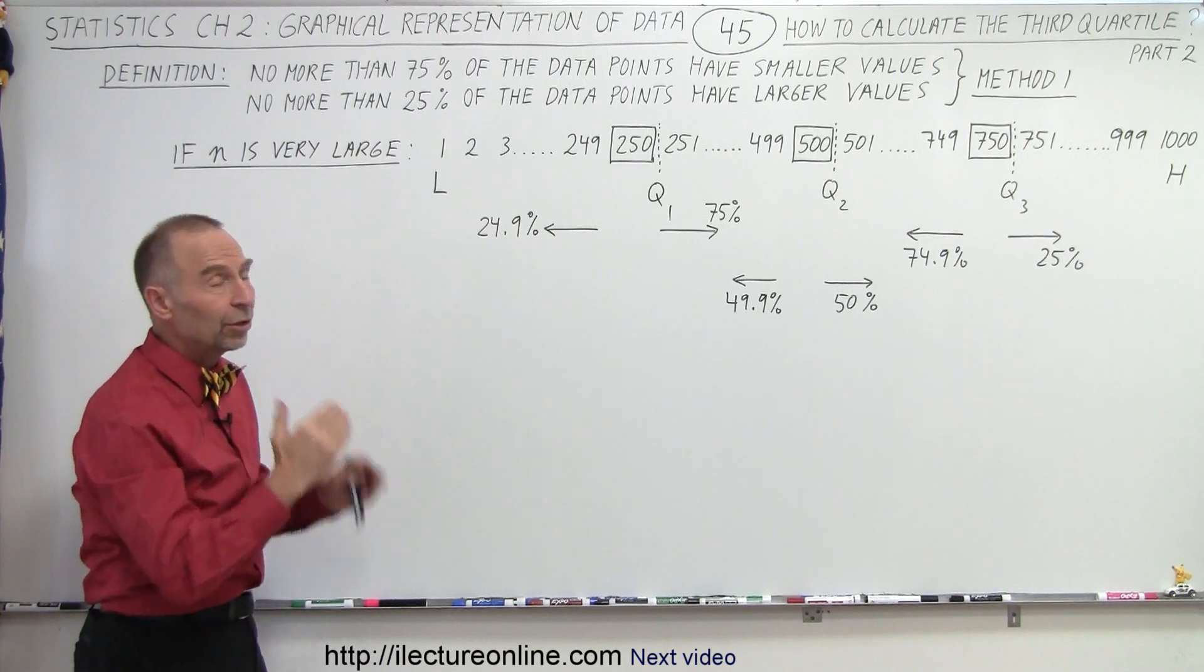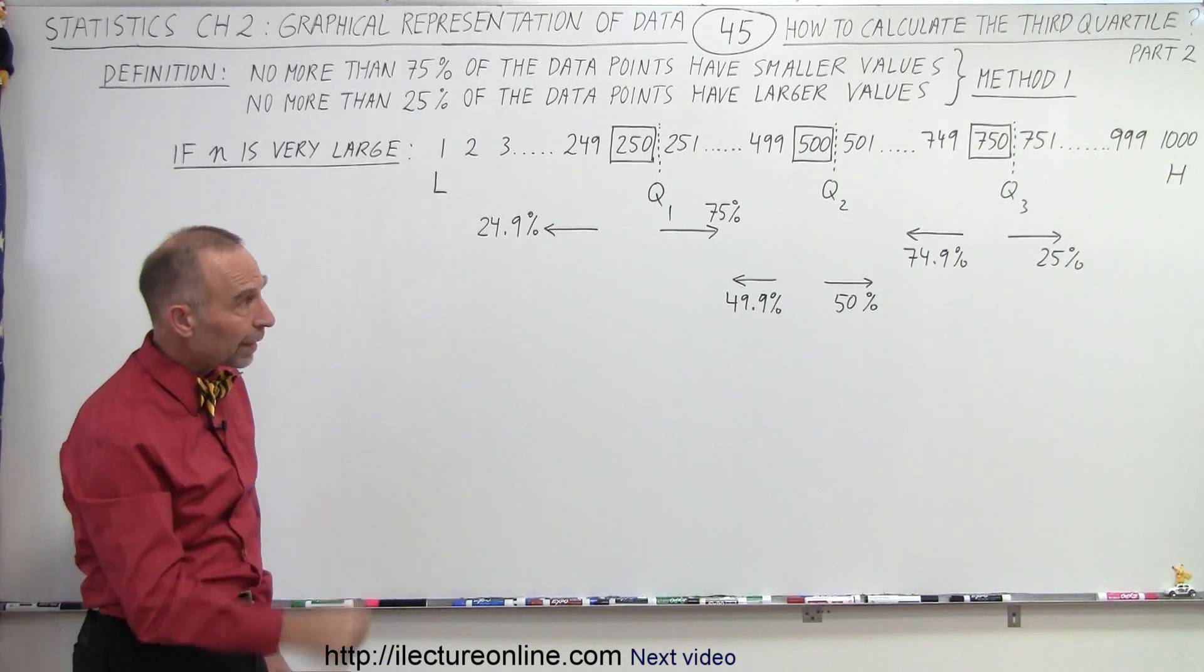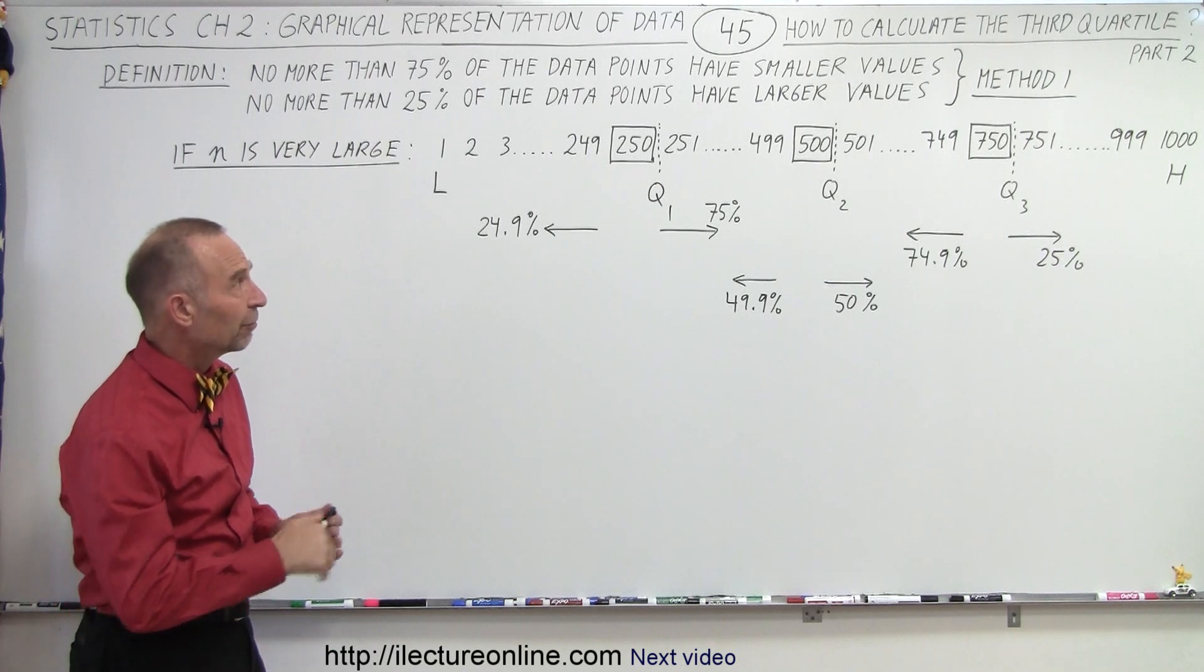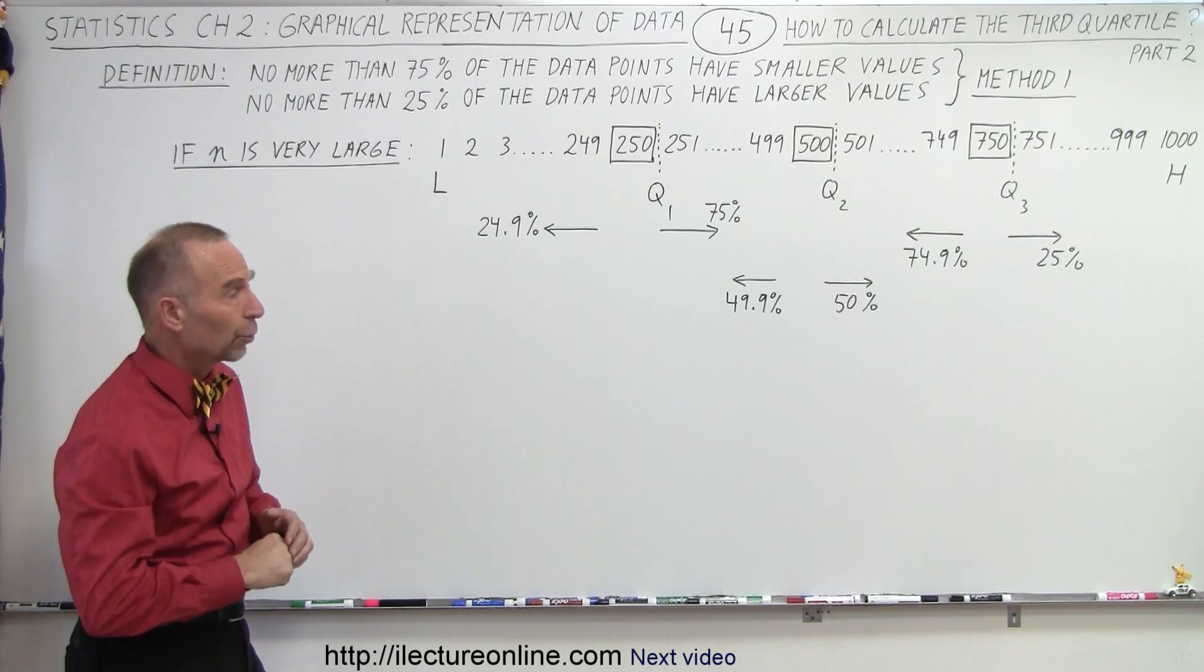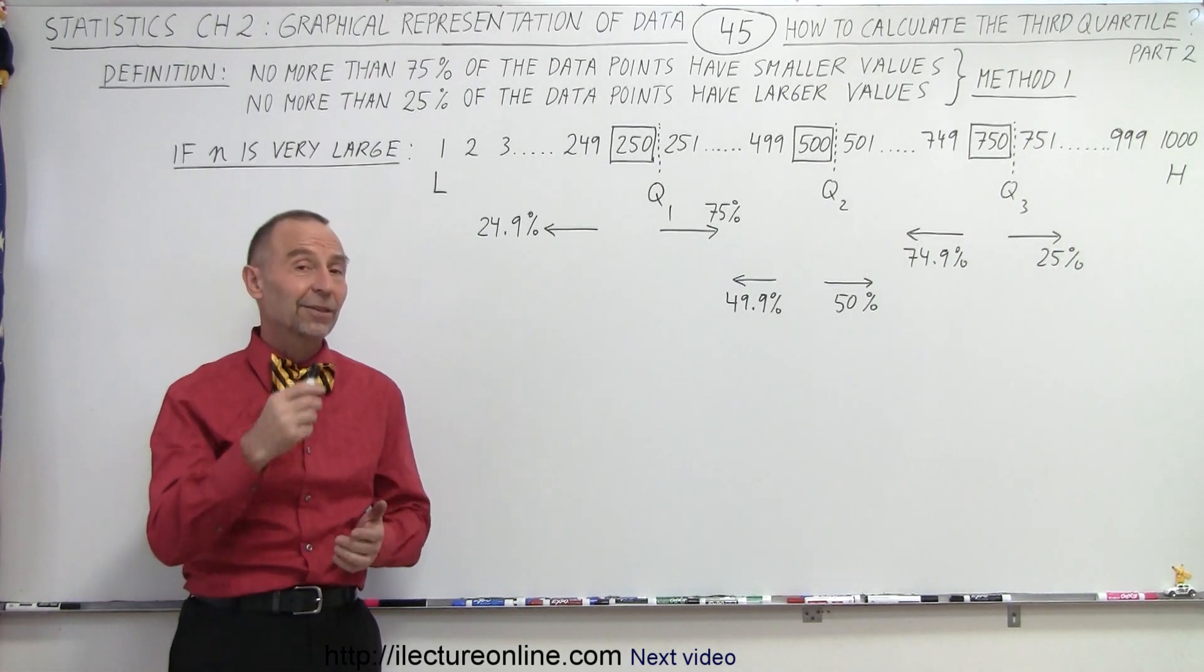So with large datasets, strictly go for that position, and that will be the value you want to pick for either one of the first, second, or third quartiles. And that is how it's done.